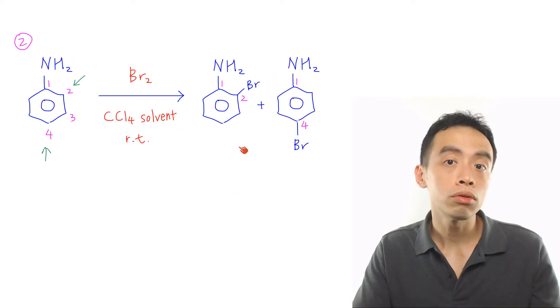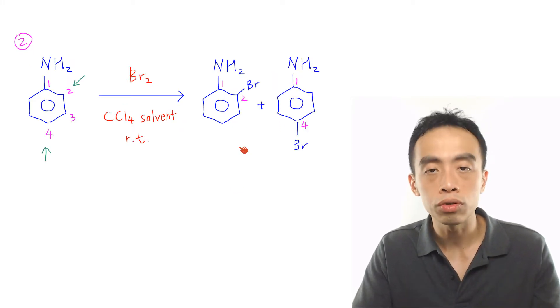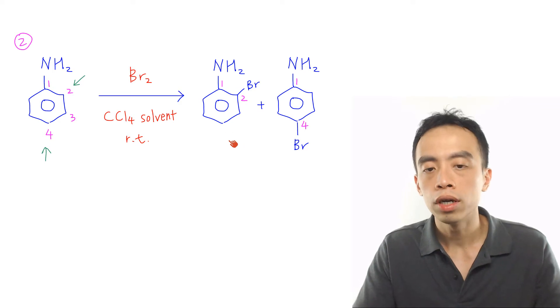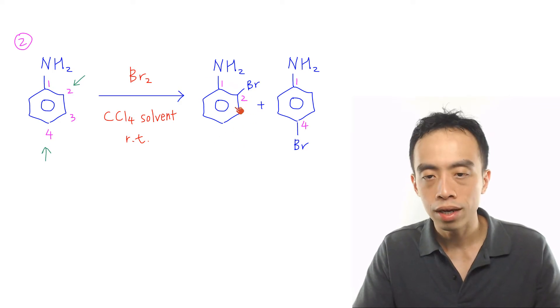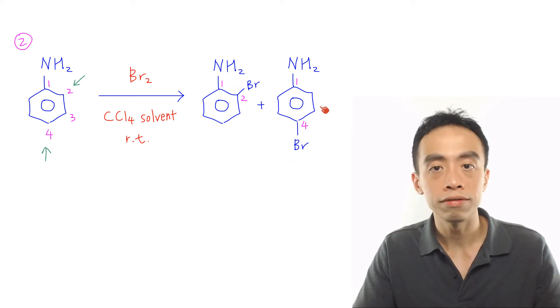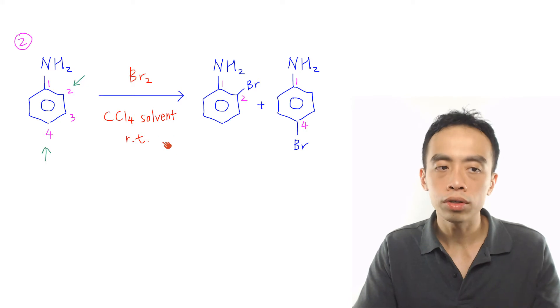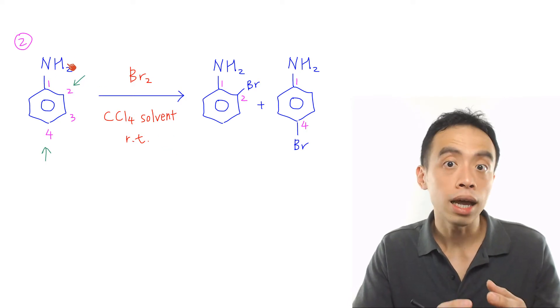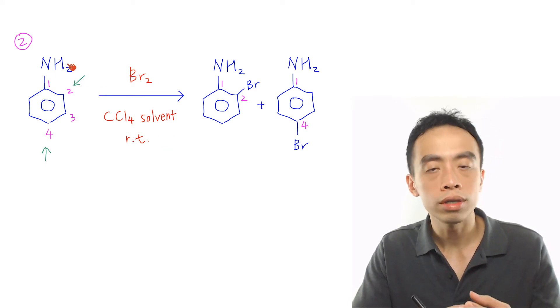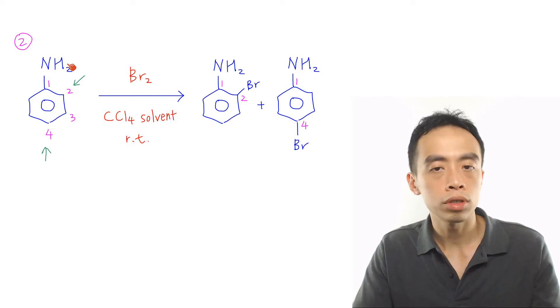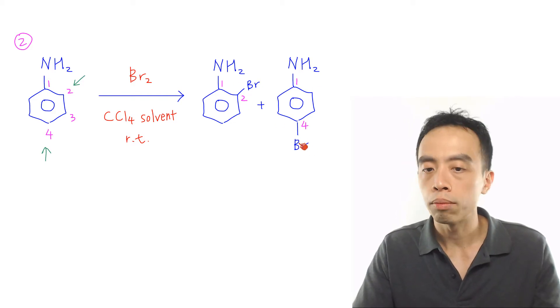Second reaction involving phenyl amine is the monosubstitution of bromine to form 2-bromo phenyl amine and 4-bromo phenyl amine. This is done using bromine in CCl4 solvent. Now take note, NH2 group is a highly activating group and it is 2,4 directing. So the substitution will occur at position 2 and position 4.